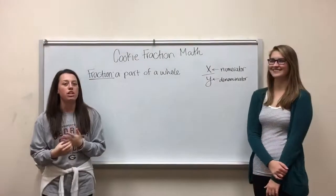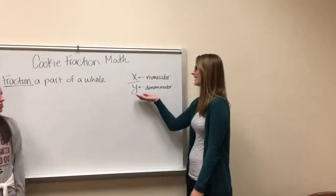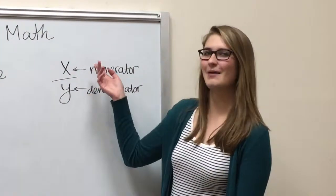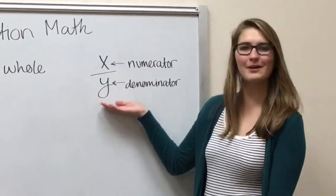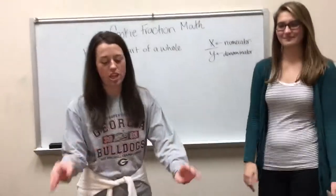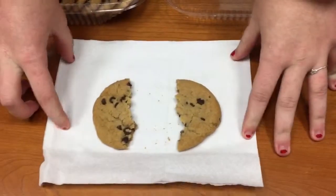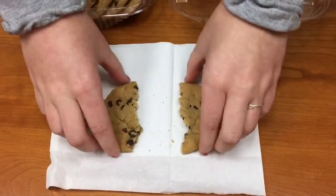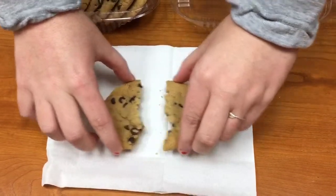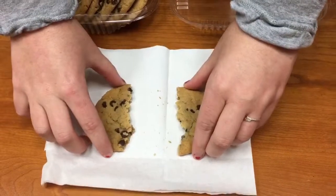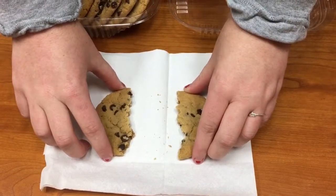So a fraction is a part of a whole. When you look at a fraction, your numerator is the number on the top and your denominator is the number on the bottom. So if you look at what we have here — a delicious chocolate chip cookie — we originally had a whole cookie and then we split it into two equal parts. So each half is one half of the whole cookie.